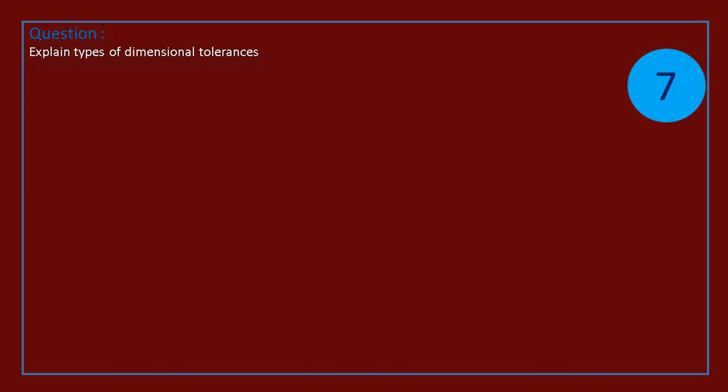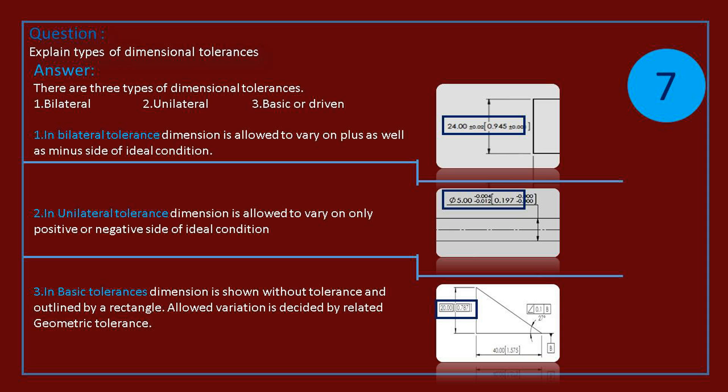Question: explain types of dimensional tolerances. Answer: there are three types of dimensional tolerances. In bilateral tolerance, dimension is allowed to vary on plus as well as minus side of ideal condition. In unilateral tolerance, dimension is allowed to vary on only positive or negative side of ideal condition. In basic tolerances, dimension is shown without tolerance and outlined by a rectangle. Allowed variation is decided by related geometric tolerance.